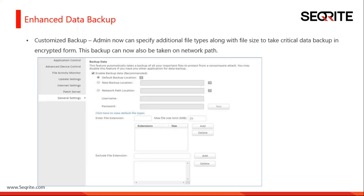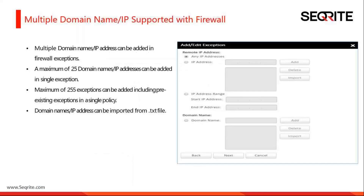If the user does not require a file to be included in the backup, they can directly exclude that file from the data backup settings. This is one very important change we have done in Endpoint Security 7.6.